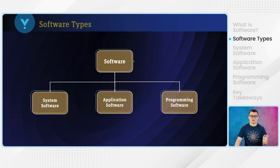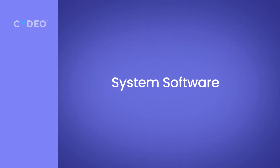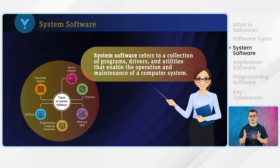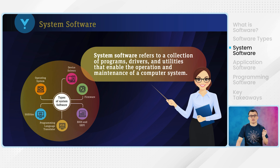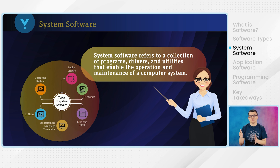First, system software refers to the collection of programs, drivers, and utilities that enables the operation and maintenance of the computer system. It is designed to manage and control the computer hardware, and it provides the platform for running application software.